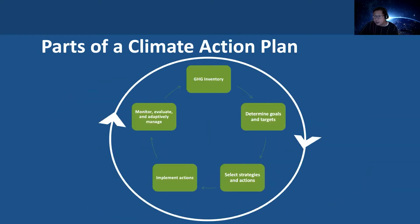A climate action plan involves a few different steps, and a lot of this is also iterative and cyclical. One of the very first steps is conducting a greenhouse gas inventory, which is used to inform current greenhouse gas emission sources and helps identify potential pathways, goals, and targets to reduce those emissions.